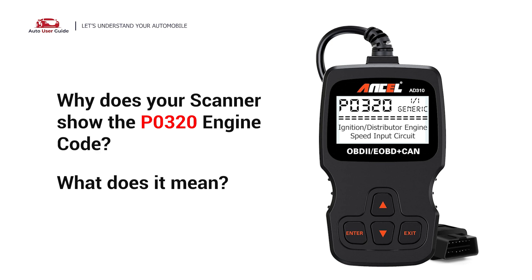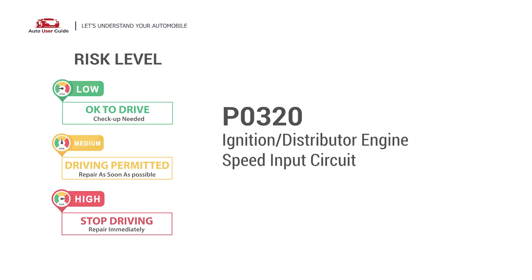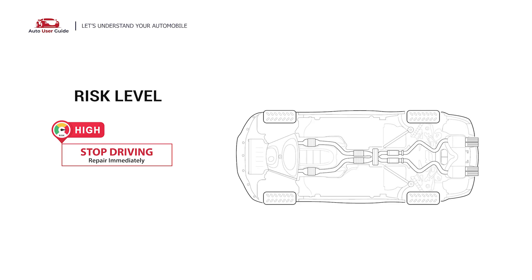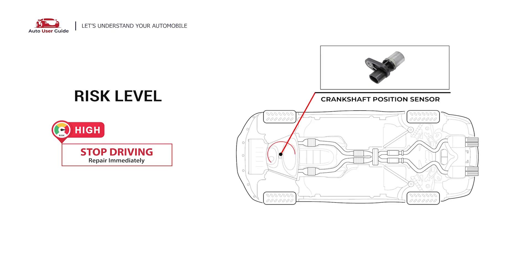Why does your scanner show the P0320 engine code and what does it mean? The P0320 engine error code stands for the ignition or distributor engine speed input circuit. It indicates an issue with the engine's speed signal, meaning the engine control module is unable to determine the location of the crankshaft or camshaft and therefore can't distribute fuel or ignite spark plugs at the correct time.